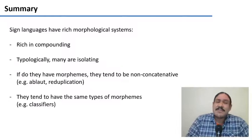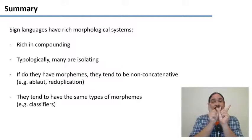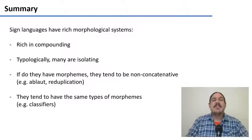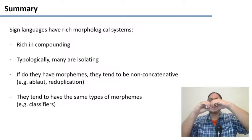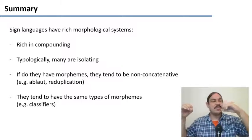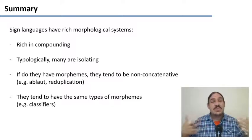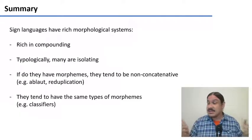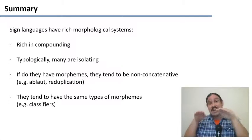Sign languages have very rich morphological systems. You can perform compounding to have two roots and form a new word. Many languages are isolating — for example, many languages have the verb separate from the tense information, whether something is in the future or the past. But if you do see morphemes, they tend to be non-concatenative; they tend to be modifications of the root, essentially what we have for 'man' versus 'men'.